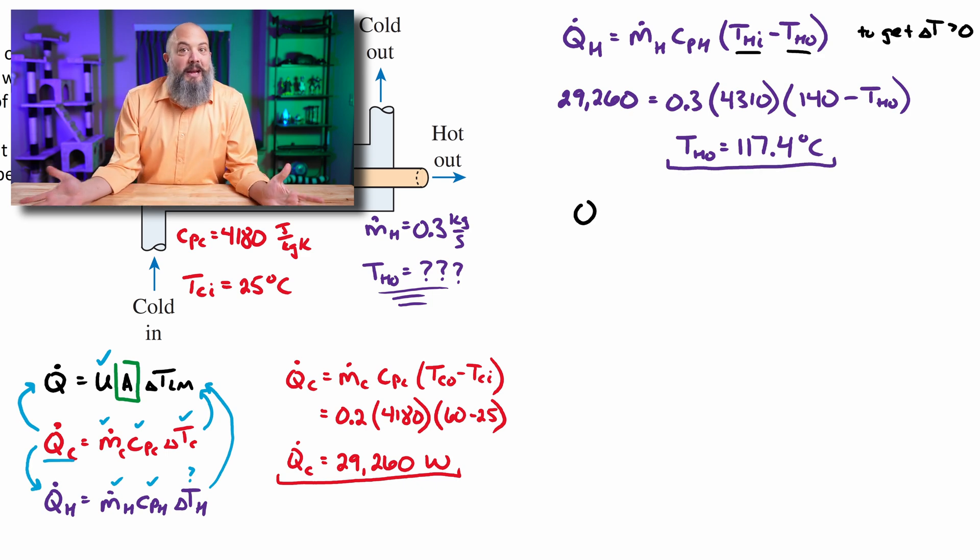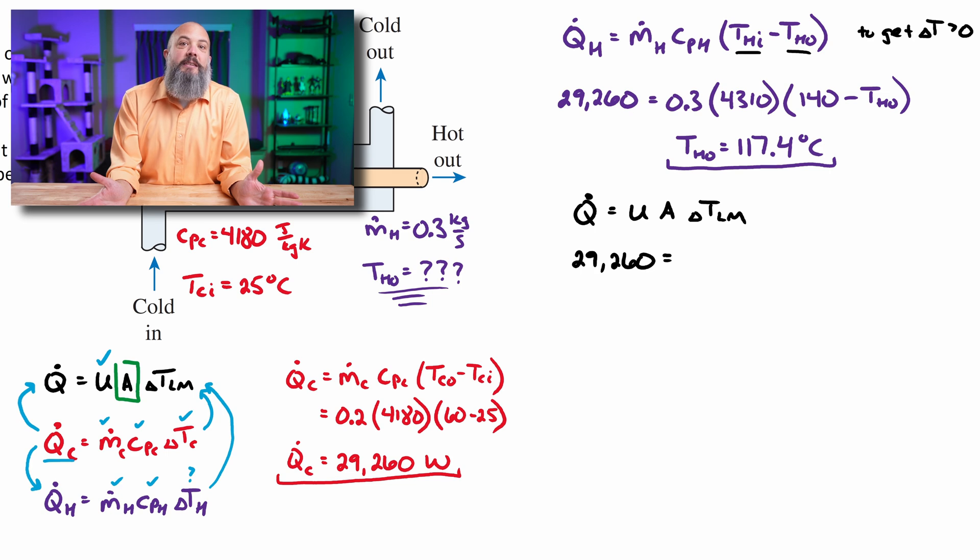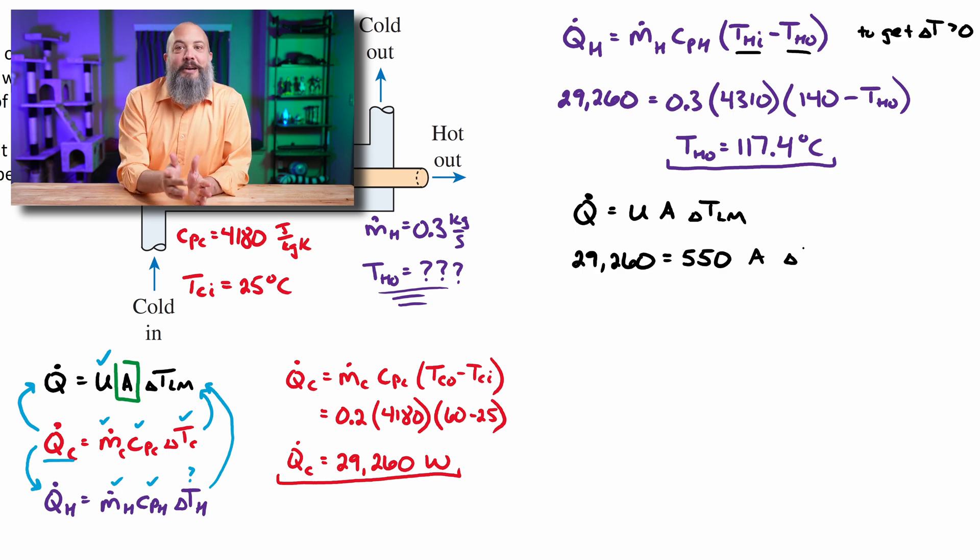And now starting to write out the third equation, Q dot equals U A delta T. This is the rate of heat transfer between the two surfaces, between the two pipes. We've got the 29,260 for Q, 550 for U, which was given. Even though it's not in my drawing, it was in the problem statement. You can go back to the beginning of the video and see. A is the final answer we're looking for. Delta T_LM, the log mean temperature difference.